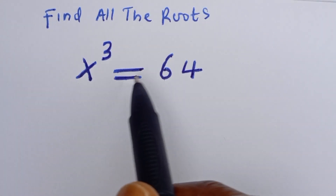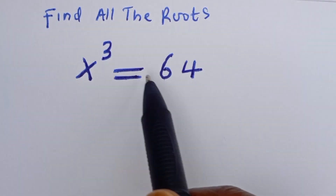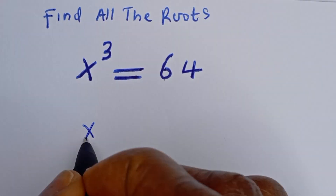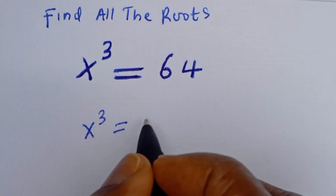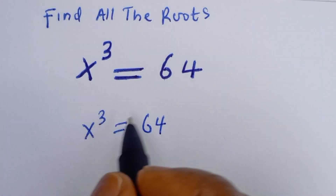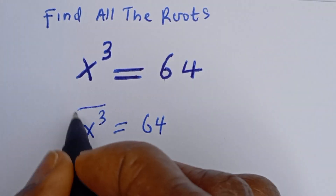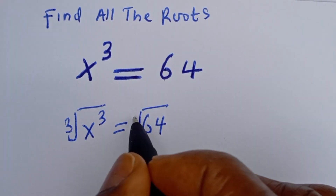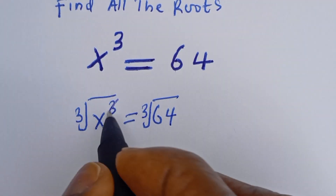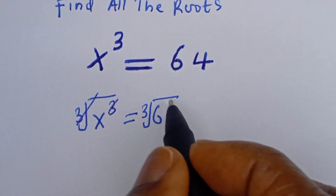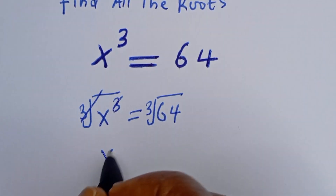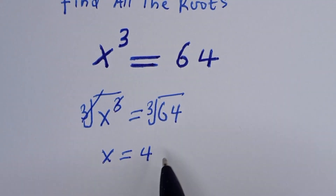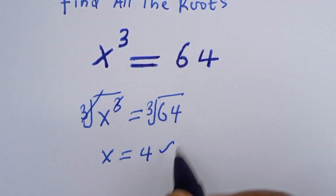Hello. How to find all the roots of this cubic equation. If you have s to the power of 3 equal to 64, let's take the cube root of both sides. Cube root of s to the power of 3, then cube root of 64 — this will cancel, and from here s will be equal to 4. But is s equal to 4 the only solution of this equation? No.